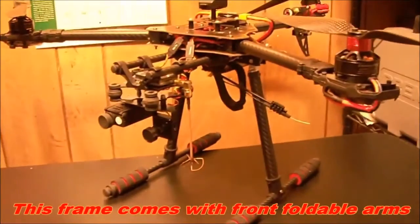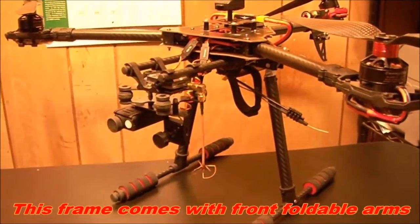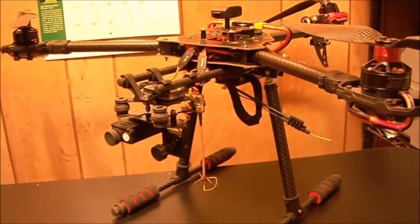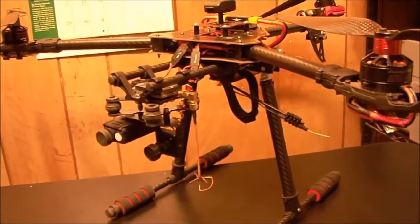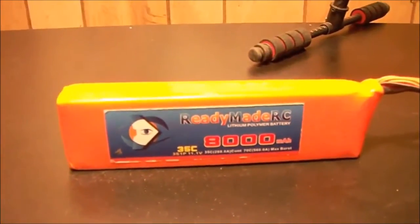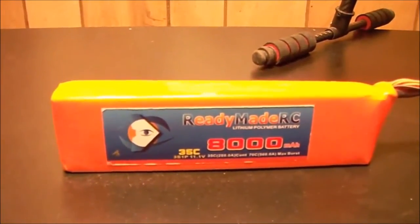Pretty much is the description of the tricopter. So, now let's talk about the performance. I've done some quick line-of-sight flights. I haven't tried it on FPV yet. And with this battery that I got here, that is an 8000 3S Rhino RC battery, I managed to do over 15 minutes of flying time.